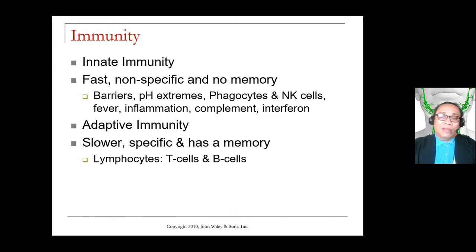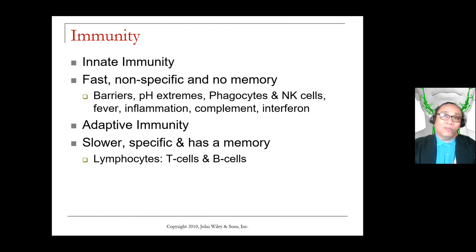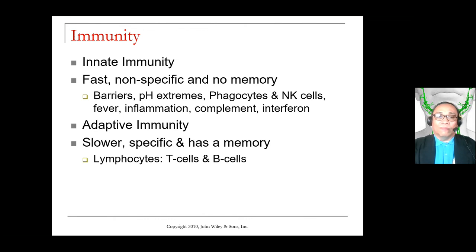Adaptive immunity, on the other hand, is slower because it requires the body to study first the disease or whatever infected it before it develops immunity. When it does, the response is specific — it develops an immunity intended specifically for a particular virus or bacteria. And it has memory, meaning you need to have prior exposure to develop immunity from a potential pathogen. The primary white blood cells involved here are lymphocytes, particularly the T cells and the B cells.